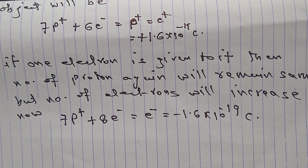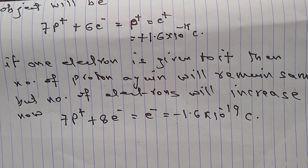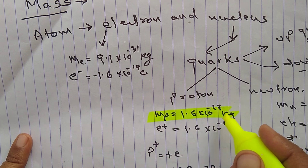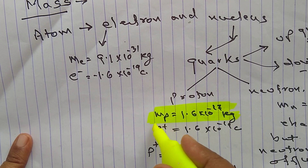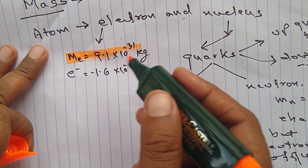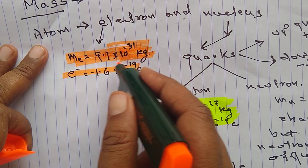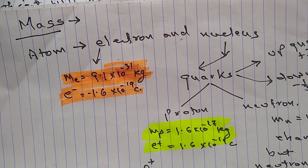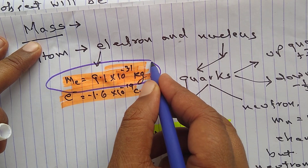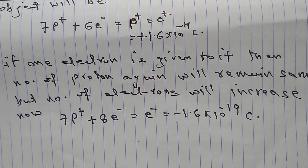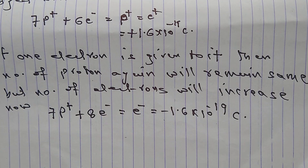As discussed previously, each object has mass. The mass of the proton is 1.67 × 10⁻²⁷ kg, and the mass of the electron is 9.1 × 10⁻³¹ kg. When an object loses or gains charge, it means it is losing or gaining an electron, and with that, a small amount of mass is either lost or gained.